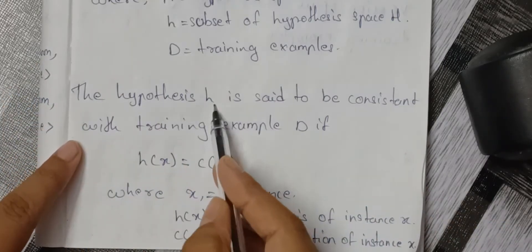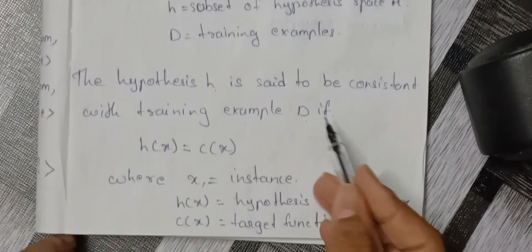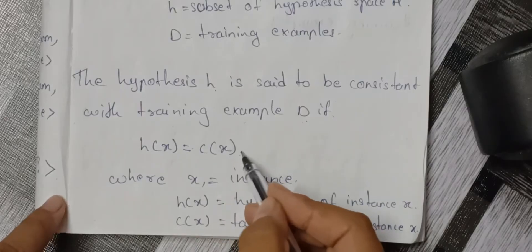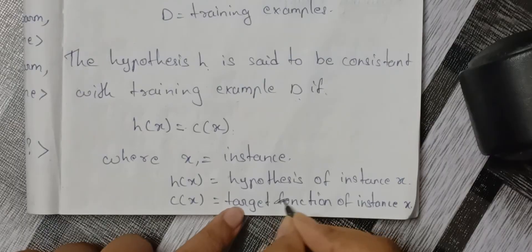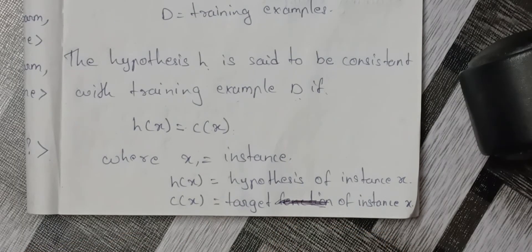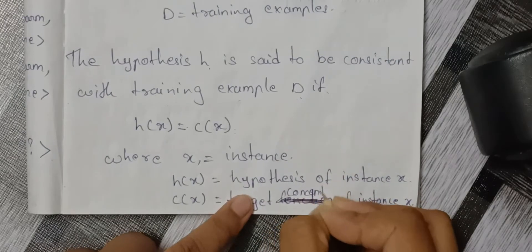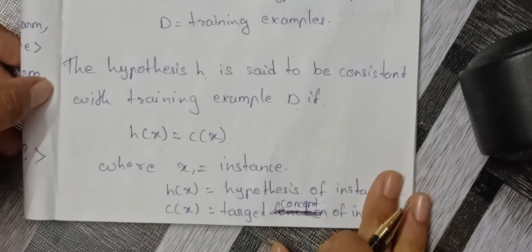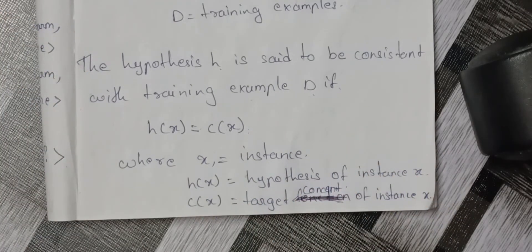The hypothesis H is said to be consistent with training examples D if H(x) is equal to C(x). Note there is a correction here — C(x) refers to the target concept, not just a target function. In a previous video on concept learning as a task, I explained that the hypothesis must be equal to the target concept.